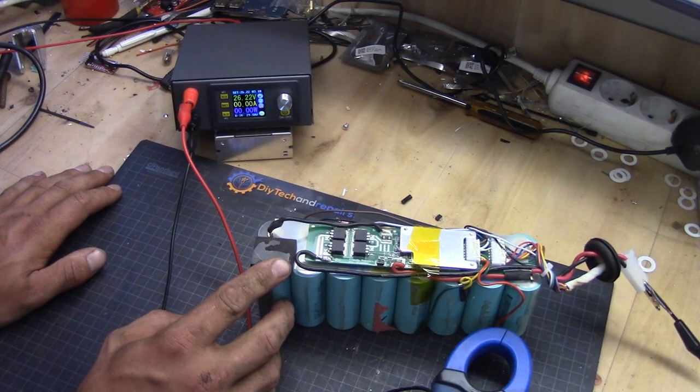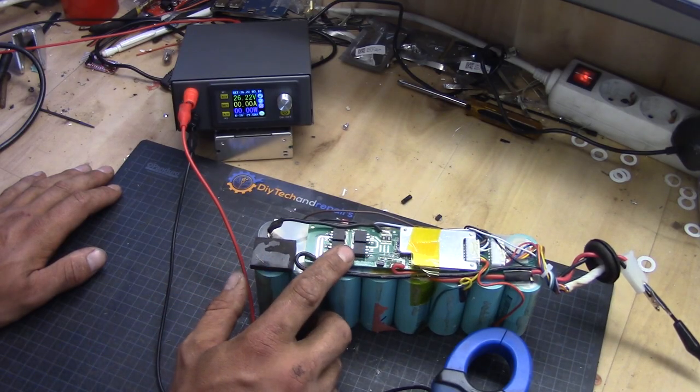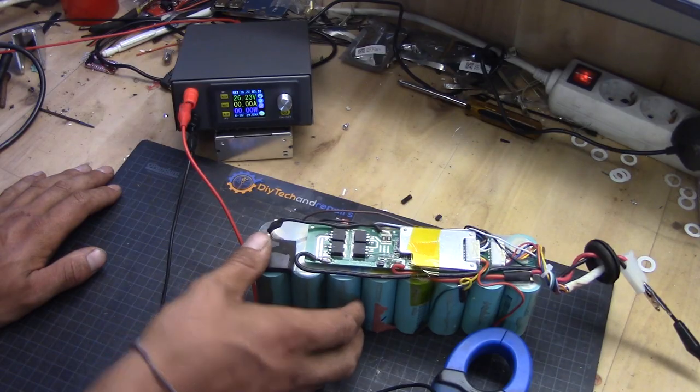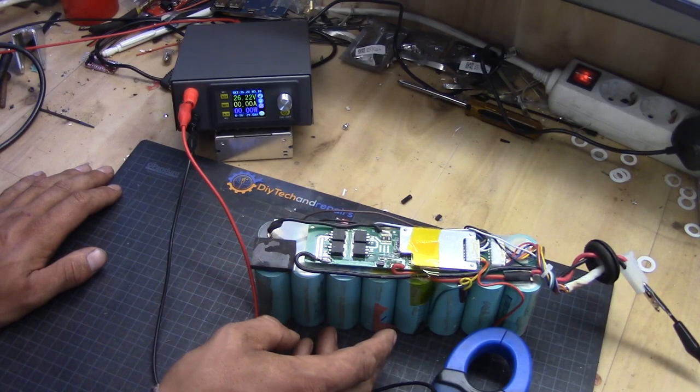The thing about this one, it can also be electronic issues. But in that case, you can still charge the battery up. Remove the BMS and use it for something else.